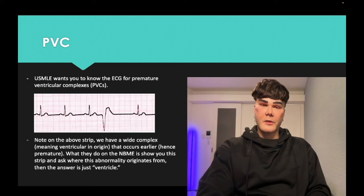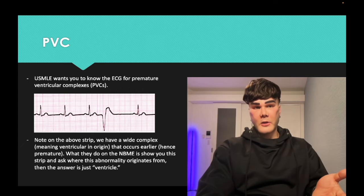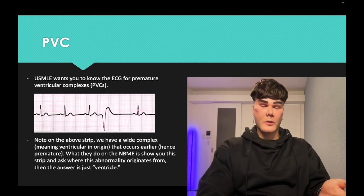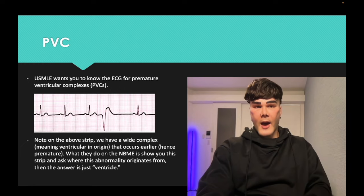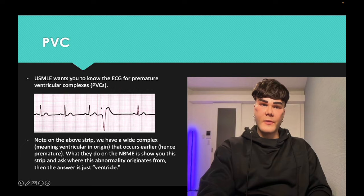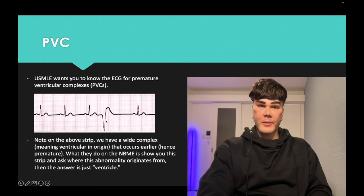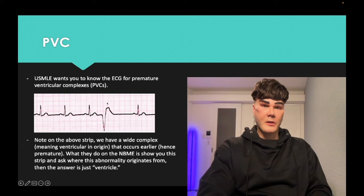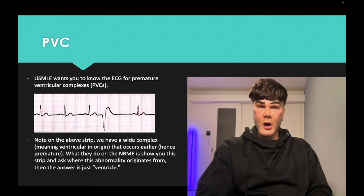Premature ventricular complexes — you need to know what these look like on ECG and just choose ventricle. You'll get this ECG on USMLE and see the abnormal part is this wide-appearing complex. Wide means ventricular. By looking at the pattern of when this complex should have occurred, it occurred a little bit early — prematurely — and it's wide. So it's a premature ventricular complex; the answer is just ventricle. You don't have to treat them for USMLE.